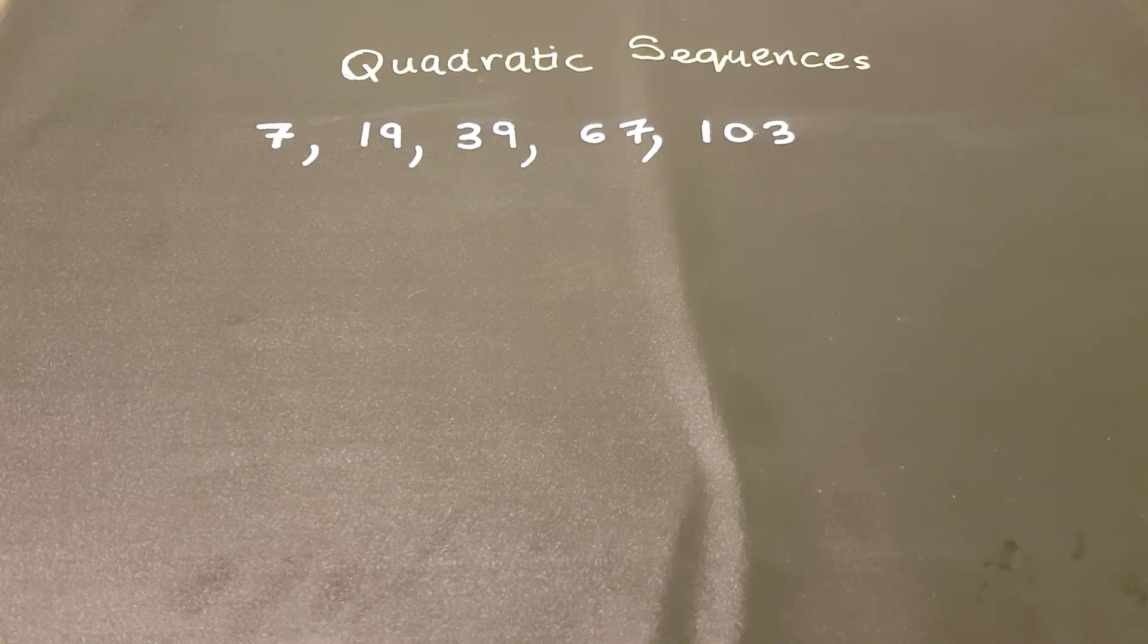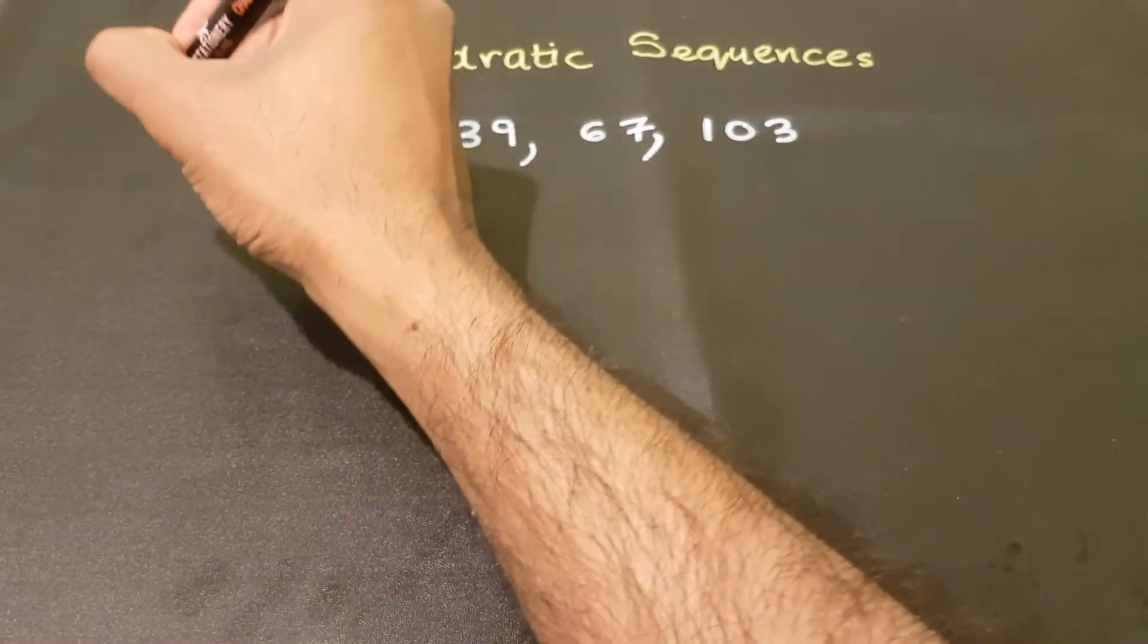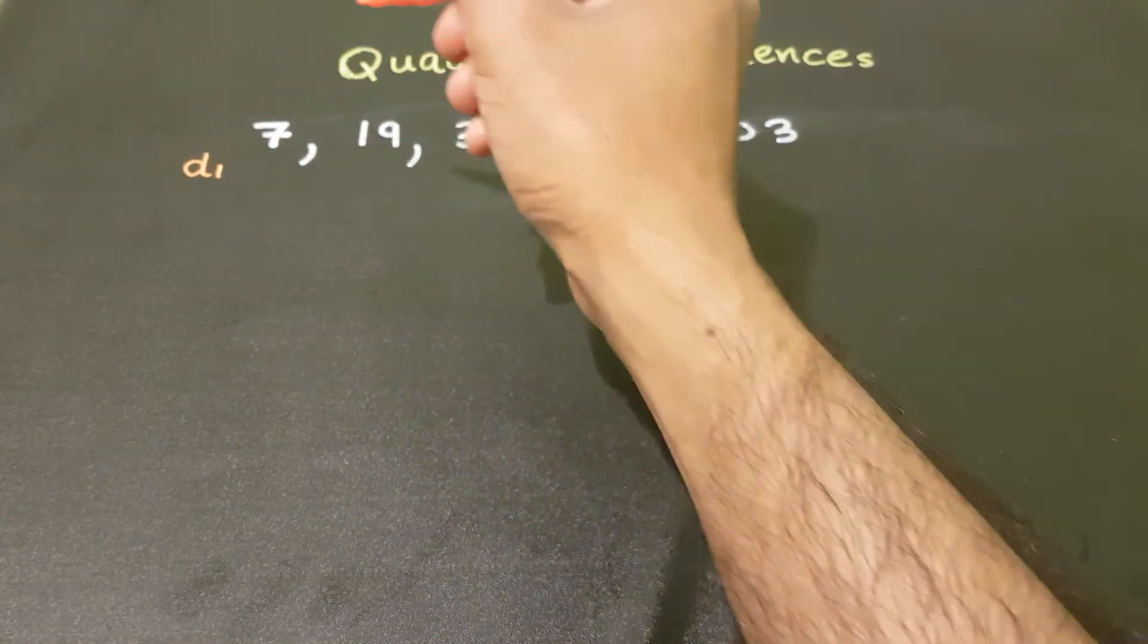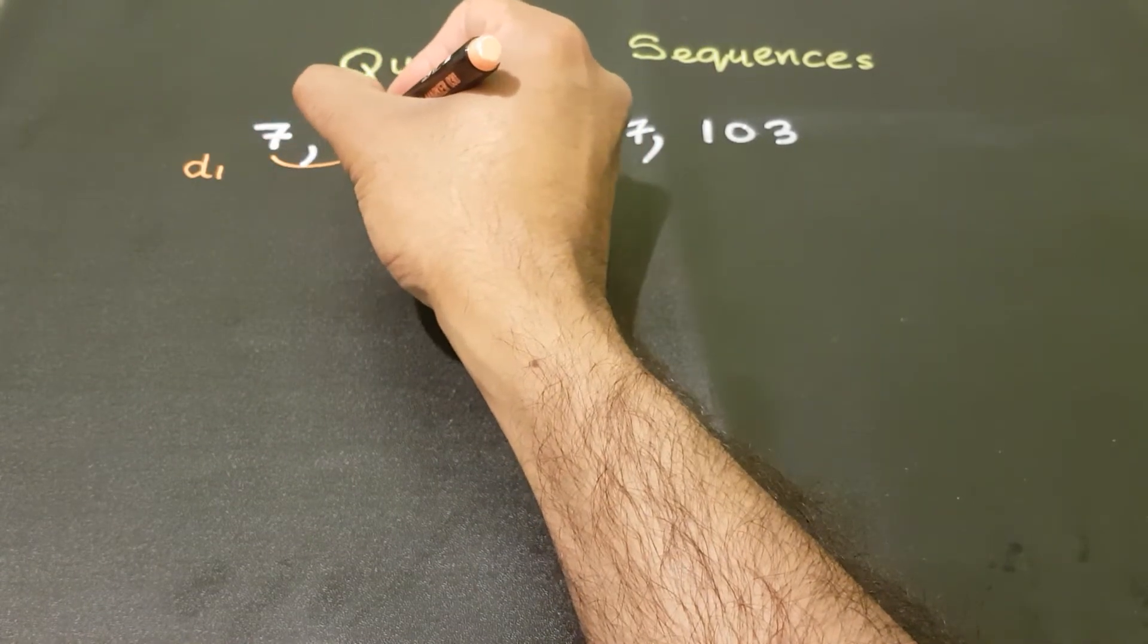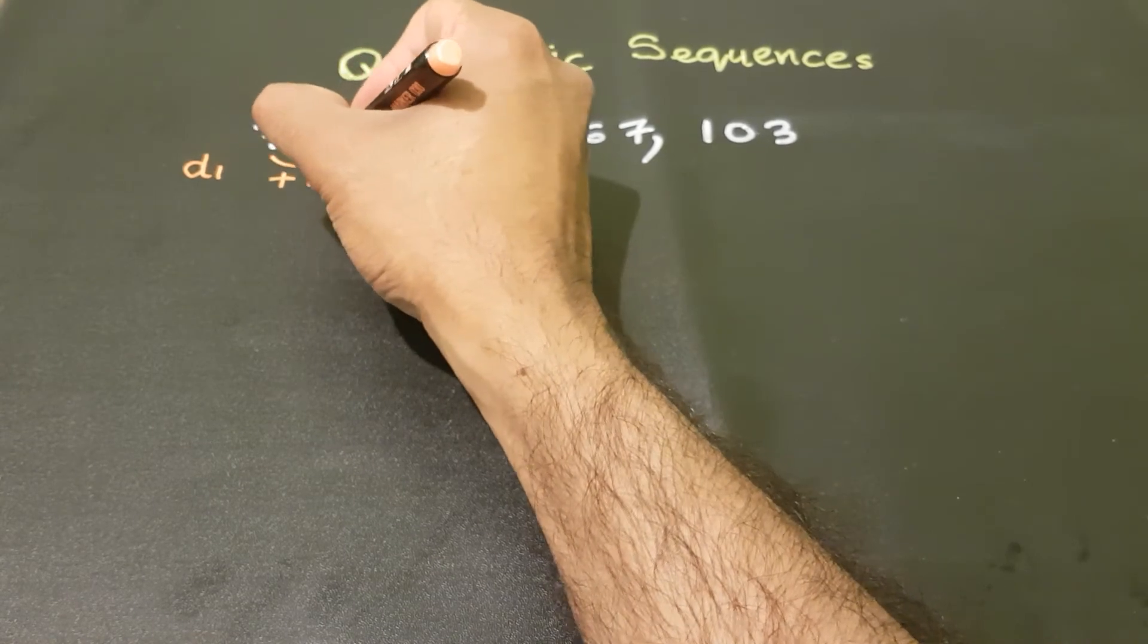To do this, we need to find the first difference and the second difference. To find the first difference, and I like to call the first difference d1, basically I just have to see how I go from 7 to 19, that's add 12.